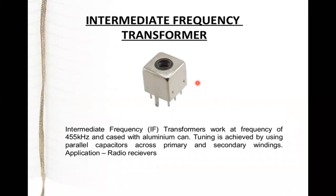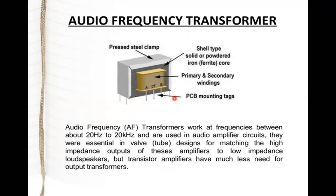Another type is the intermediate frequency (IF) transformer, which works at a frequency of 455 kHz and is encased in an aluminum can. Tuning is achieved using parallel capacitors across primary and secondary windings. IF transformers are mainly used in radio receivers.